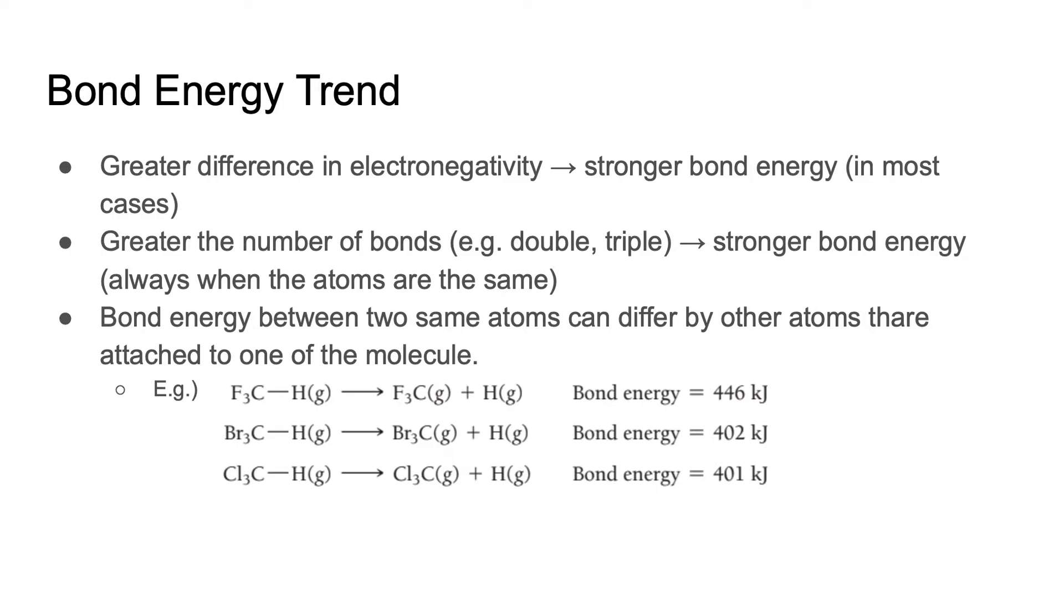The trend of bond energy is that the greater difference in electronegativity between two atoms, the stronger the bond energy. For example, the bond of CH, carbon and hydrogen, is almost 1.5 times greater than carbon and nitrogen because the difference in each of their electronegativity is greater for CH than CN.